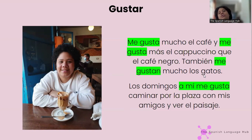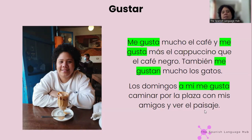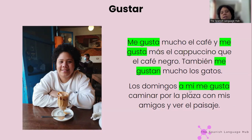Los domingos, a mí me gusta caminar por la plaza con mis amigos y ver el paisaje — on Sundays I like to walk in the plaza with my friends and see the landscape. Here I'm using 'a mí' just to emphasize; I don't really need it. I can just say 'los domingos me gusta caminar' and that's it.